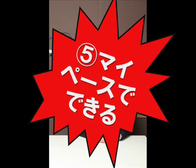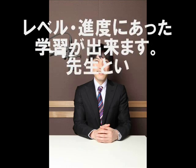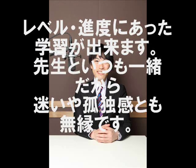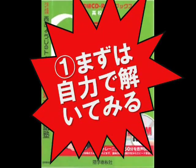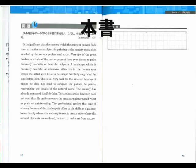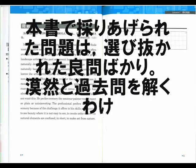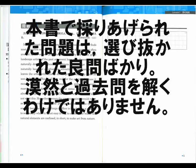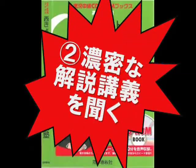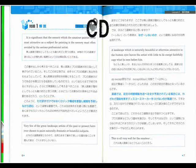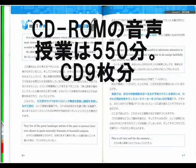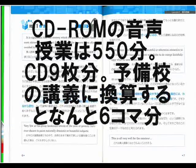第2文。Very few of the great landscape artists of the past have ever chosen to paint naturally dramatic or beautiful subjects. 偉大な大風景画家たちの中で自然のままで劇的で美しい主題を描くことを選んだものはvery few、ごくわずかしかいない。ということは、この自然のままで劇的で美しい主題、これを素人画家は好んだのだ、魅力的だと考えたのだということですね。